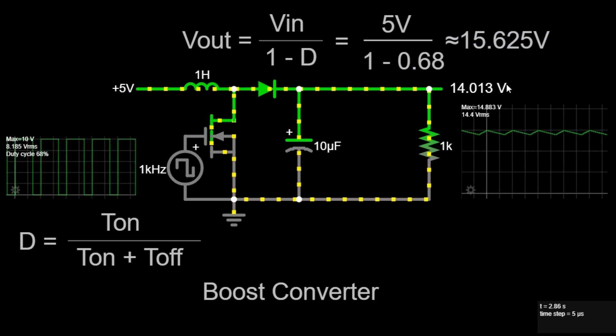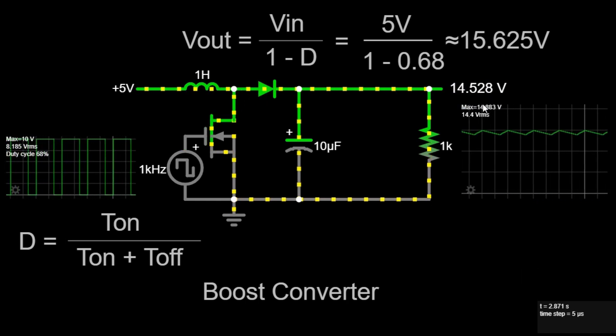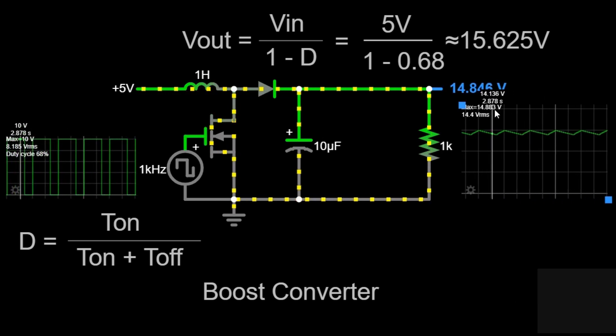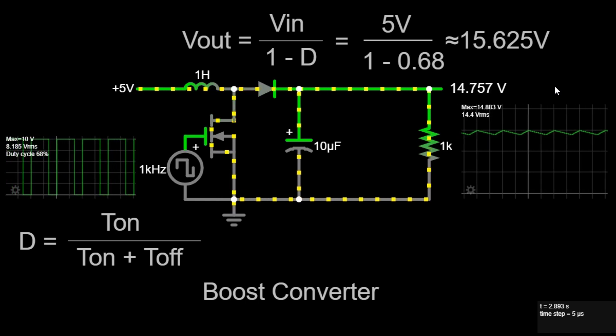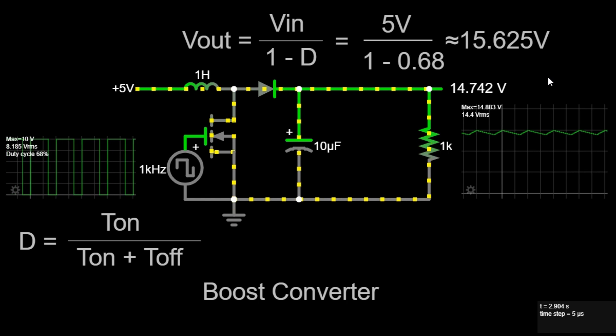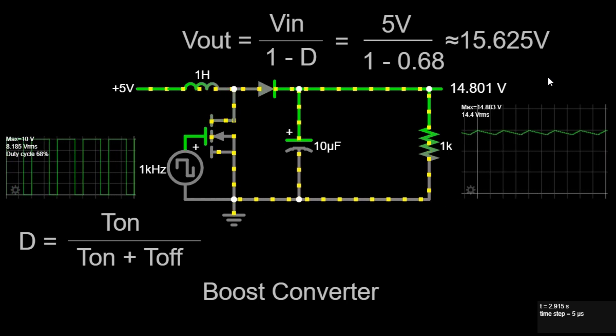However, in a real circuit, there are inefficiencies and component losses, which is why the simulated output voltage is slightly lower, at approximately 14.329 volts. These inefficiencies can be due to the resistance in the components, imperfect switching, and other real-world factors.